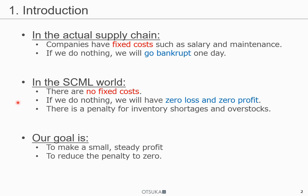But even then, it is difficult to get a positive score on the standard track. This is because there is a penalty such as inventory shortage and overstocks. Our goal is to make a small steady profit and to reduce penalty to zero.